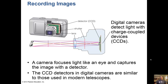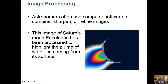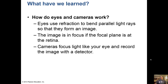Most CCDs used by astronomers are actually very delicate, expensive objects — cameras that can cost tens of thousands of dollars and are cooled with liquid nitrogen. Astronomers often use computer software to combine, sharpen, or refine these images. This is an image of Saturn's moon Enceladus, produced to highlight the plume of water ice coming from its surface.